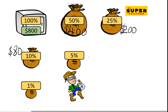And 5% is half of 10%, and that's $40. And 1% is 800 divided by 100—the zeros cancel—and that's $8. Well done!